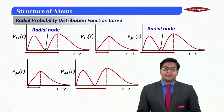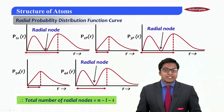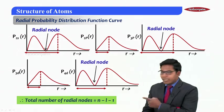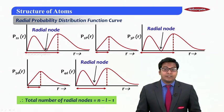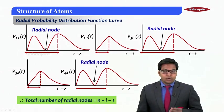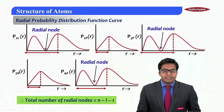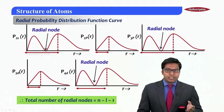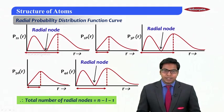This gives us a pattern. Here you would see there is one radial node forming. This gives us a pattern that the total number of radial nodes will be equal to n minus l minus 1. Therefore to calculate the number of radial nodes for any particular orbital we can use this formula: n - l - 1. From there we can get what is the total number of radial nodes.